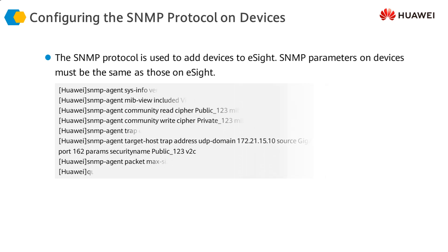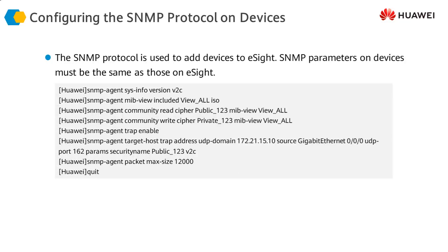This is how we configure SNMP parameters on the firewall. We configure the SNMP version, and we give the read community and write community values — which are essentially passwords in SNMP. Then we enable traps and provide the IP address for sending those traps, which is the IP address of the NMS or eSight server.